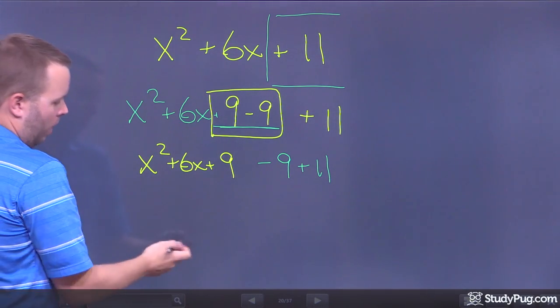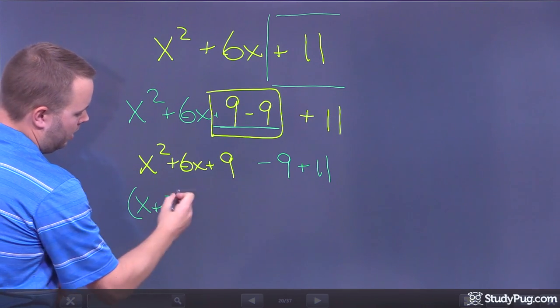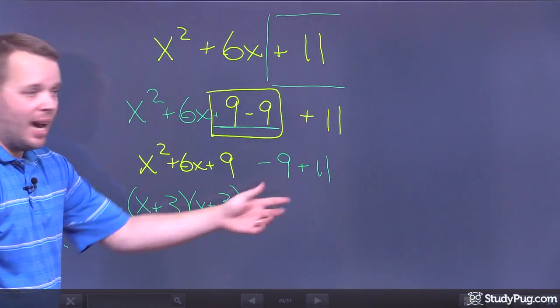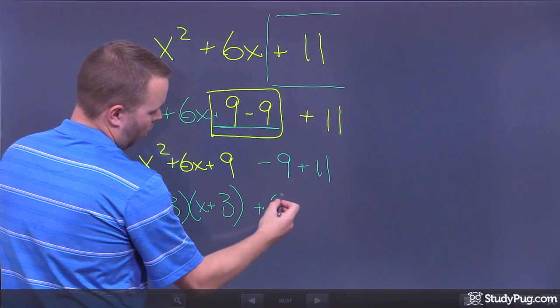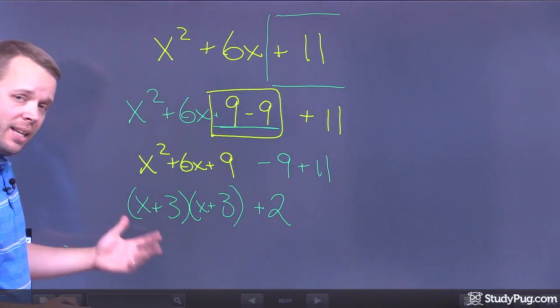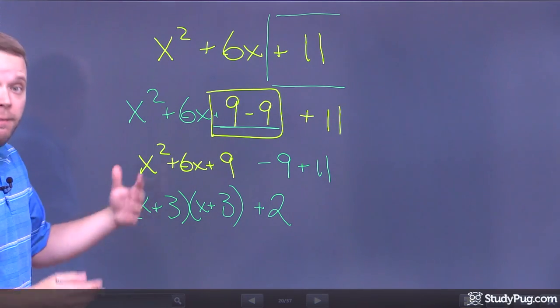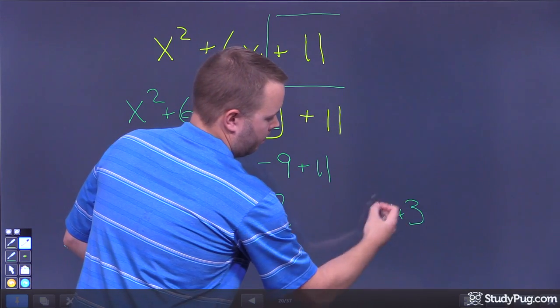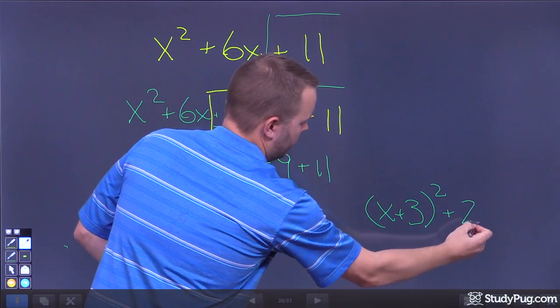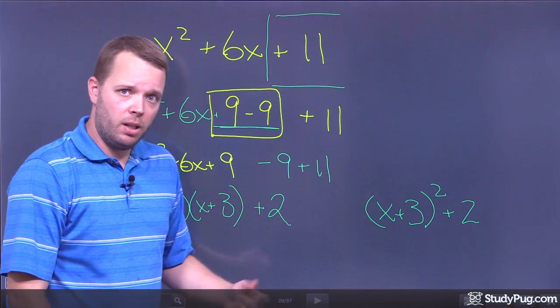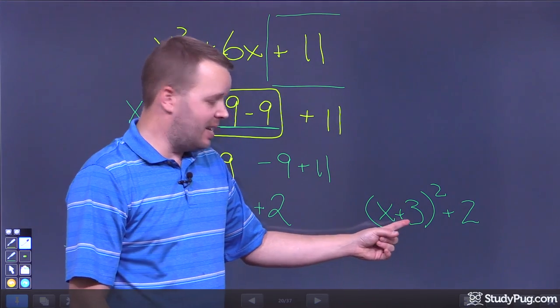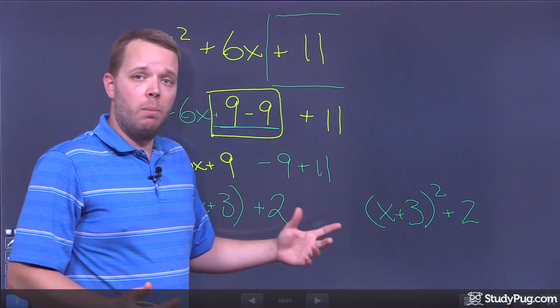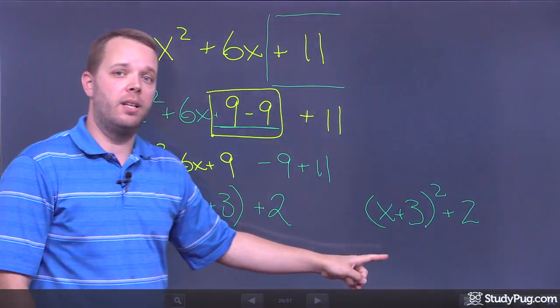Right? When I factor this, well, that turns into x plus 3 times x plus 3. That's a perfect square trinomial. Well, I can then put together negative 9 and positive 11. Negative 9 plus 11 is positive 2. And now check it out. I end up with an equation that looks an awful lot like my vertex form. So this is x plus 3 squared plus 2. And now I can tell you what that parabola looks like, what that shape is. I know its vertex is at negative 3 positive 2. And I know that it's not being stretched or compressed at all. So I now know a whole lot more about what that picture looks like by converting it into this form.